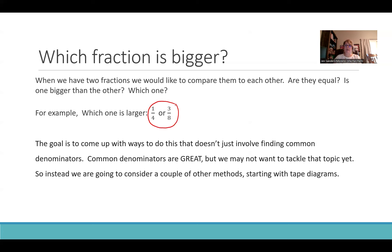For most adults, what they would do is find a common denominator and then compare it that way. But we don't want to just jump into common denominators. Maybe this is third grade — end of third grade — where we're just learning what a fraction represents. How can you decide which is bigger or smaller using two diagrams, picture models, fraction tiles, whatever it is? That's what we're going to look at right now.